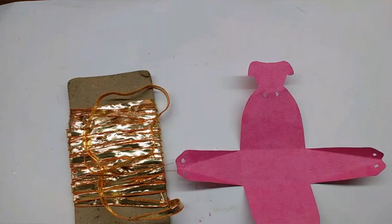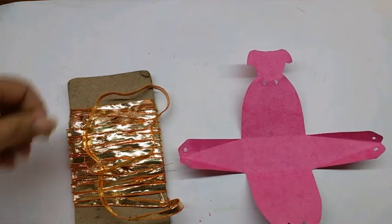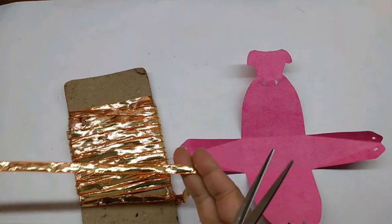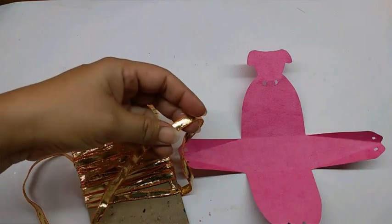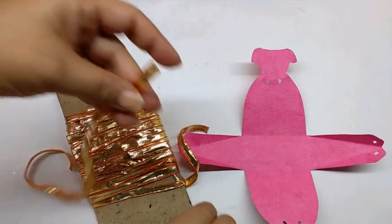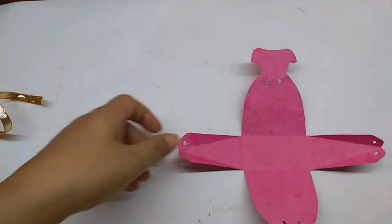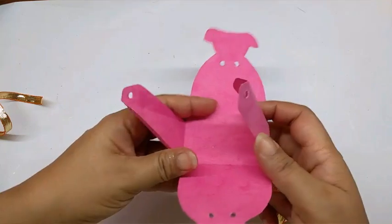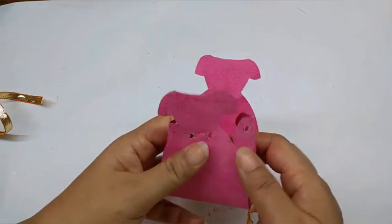To make the bride's box, first take the metallic golden ribbon and cut out about 12 inches from it. Now the bride's box is very simple to fold. It just comes together like this.